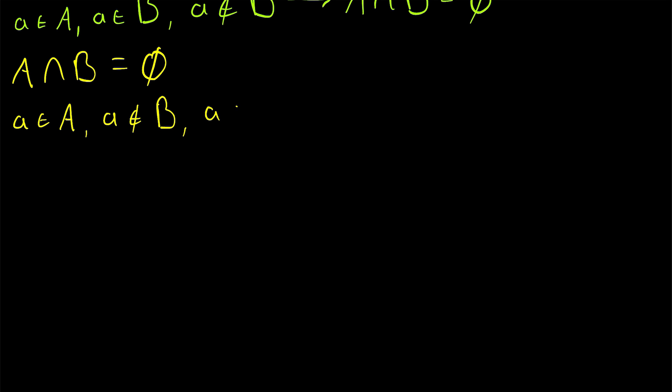Therefore, by definition, the element a is an element of the complement of B. Thus, all elements of A are also elements of B complement, hence, draw that little arrow, therefore, the set A is a subset of the complement of B, which,